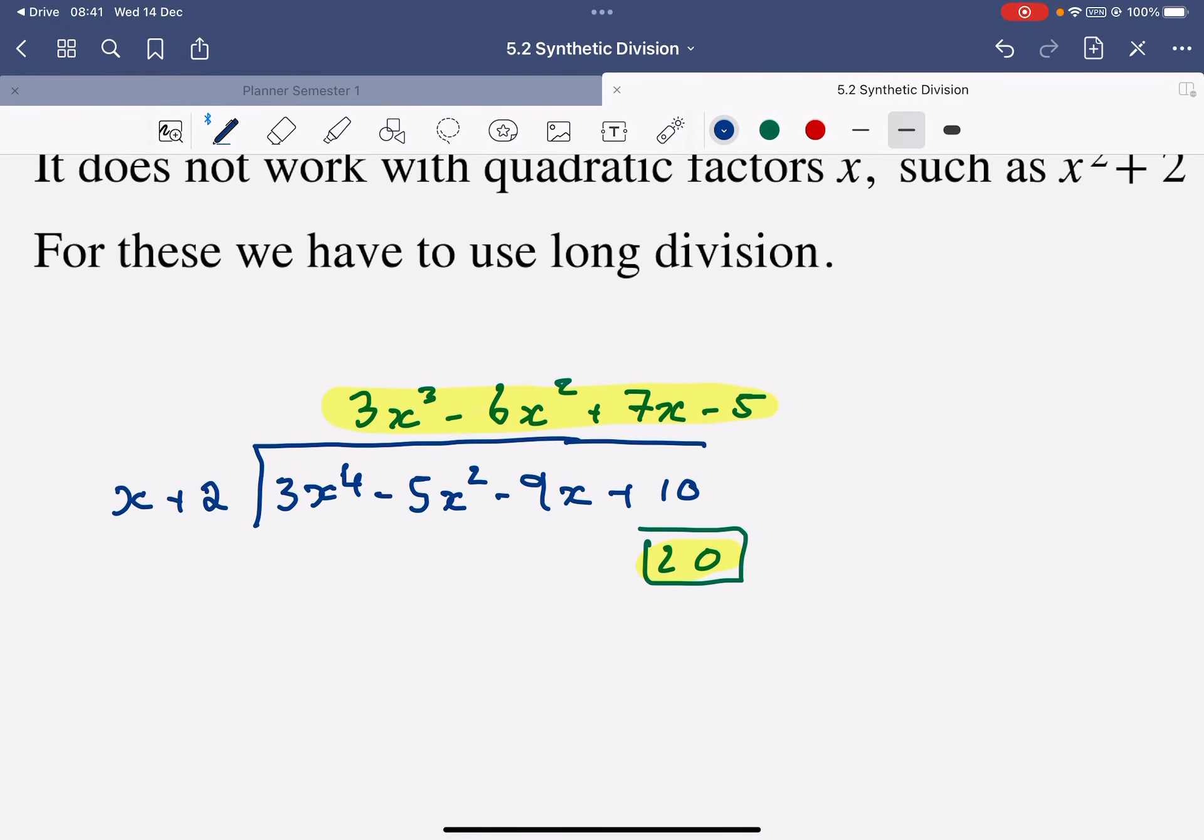Okay, I've already done a little warm-up where I've done some long division. I've divided 3x to the power of 4 divided by x plus 2, and I've got those two highlighted parts. So there's a remainder of 20, and there's that highlighted part of 3x cubed minus 6x squared.